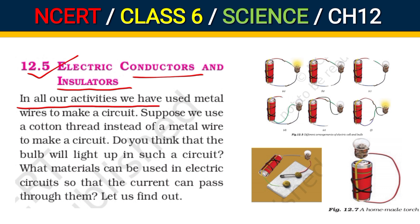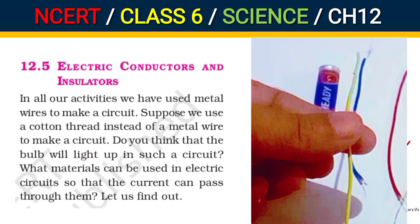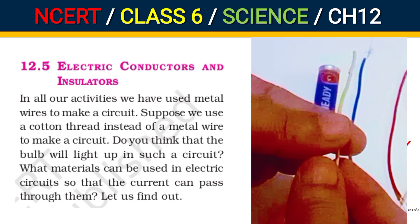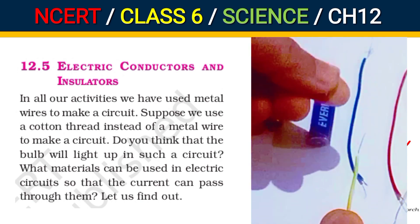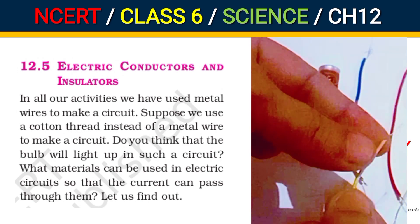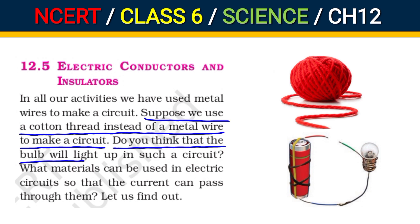In all our activities, we have used metal wire to make a circuit. In this chapter, whatever activities were done, the wire used was always metal wire, as you saw in the video when the covering was removed. Now suppose we use a cotton thread instead of a metal wire to make a circuit — do you think the bulb will light up in such a circuit?